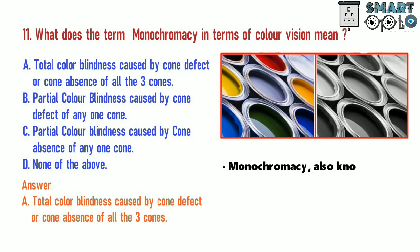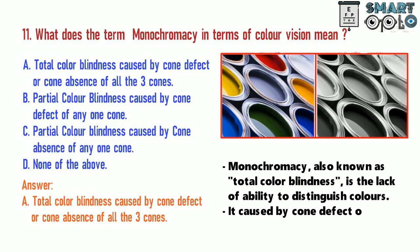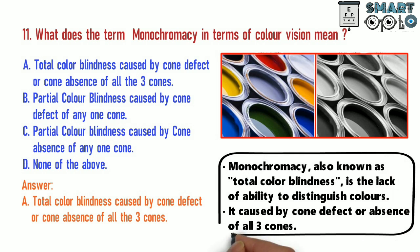Monochromacy, also known as total color blindness, is the lack of ability to distinguish colors. It is caused by cone defect or absence of all three cones.